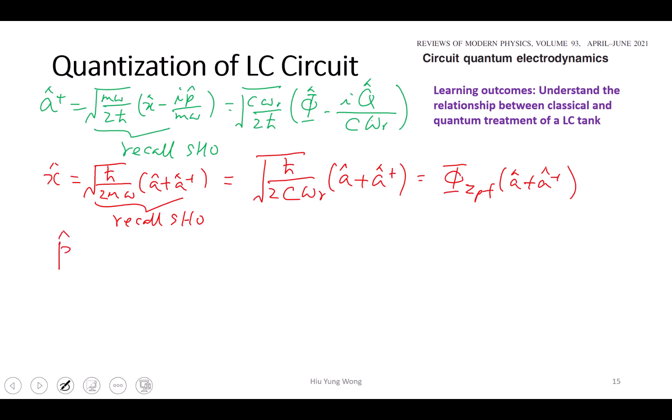Then P equals to negative I square root h bar M omega divided by 2, A minus A dagger. So this one equals to I minus I square root h bar C omega R divided by 2, A minus A dagger.